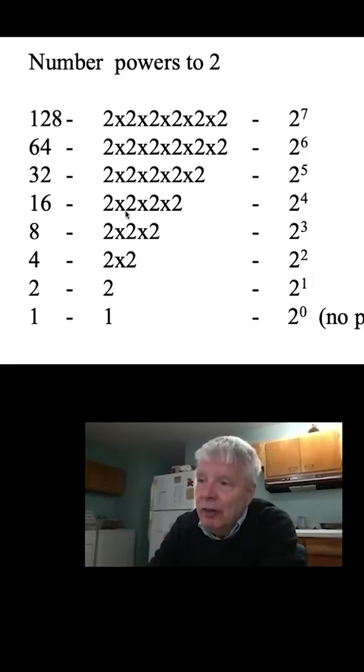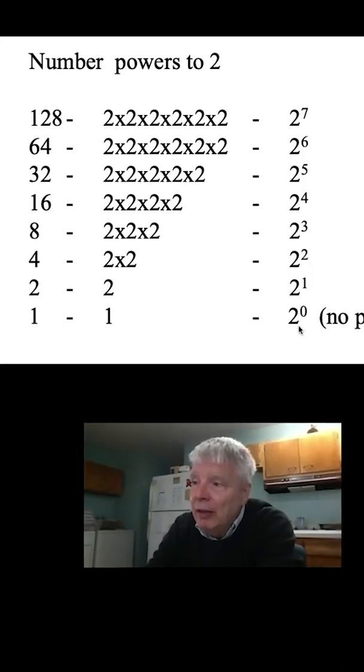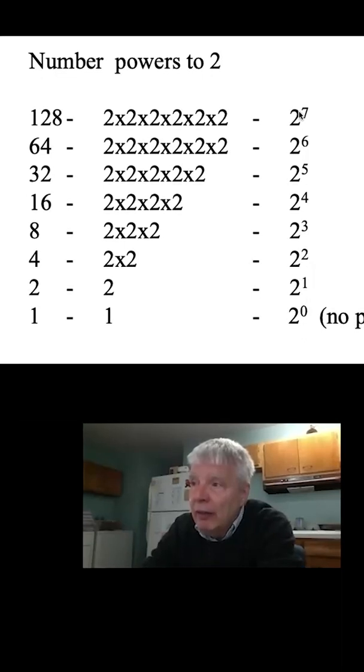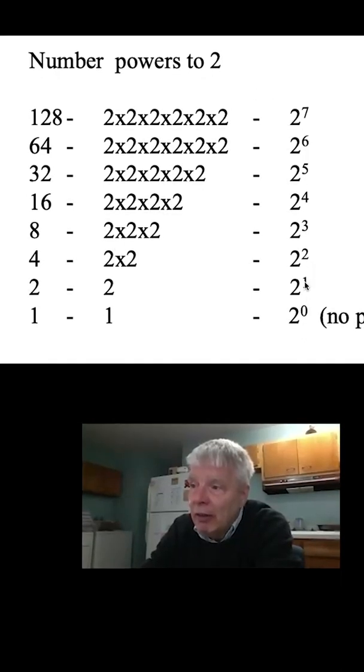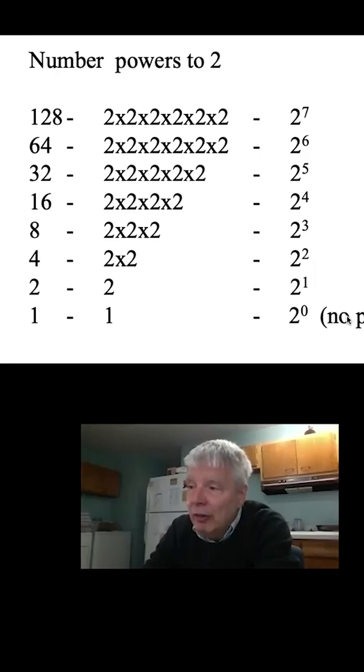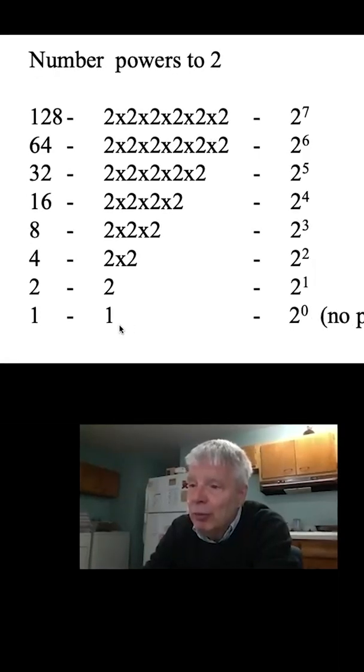This is just the number of 2s that make up the number. In the very same way, I can summarize this way, where 2 to the 0 means no powers of 2, which would be 1.